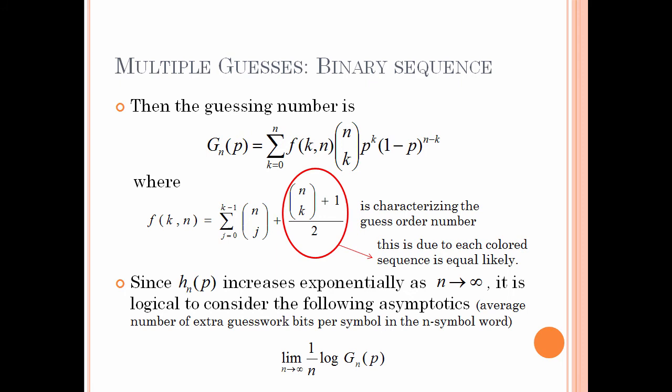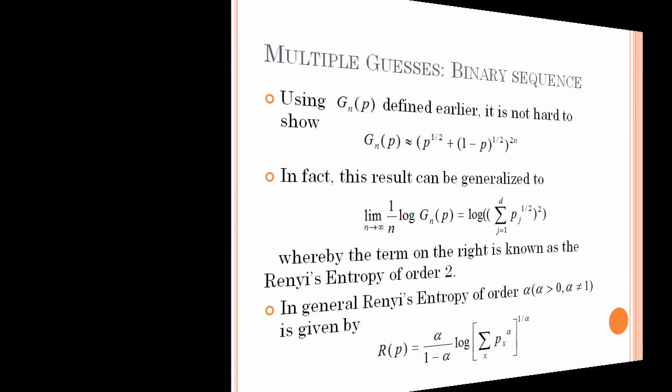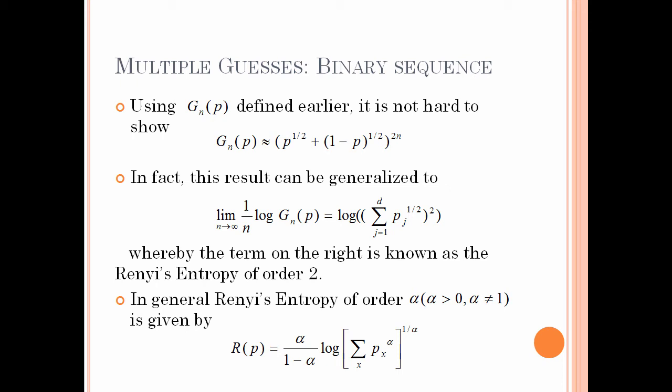Since H_n(P) increases exponentially as n goes to infinity, it is logical to consider the following asymptotics: the average number of extra guesswork bits per symbol in an n-symbol word, given by lim_{n→∞} (1/n) log G_n(P). Using the guessing number found for the Bernoulli source, as n tends to infinity, the guessing number takes the form G_n(P) = (√p + √(1-p))^2 raised to the power 2^n.